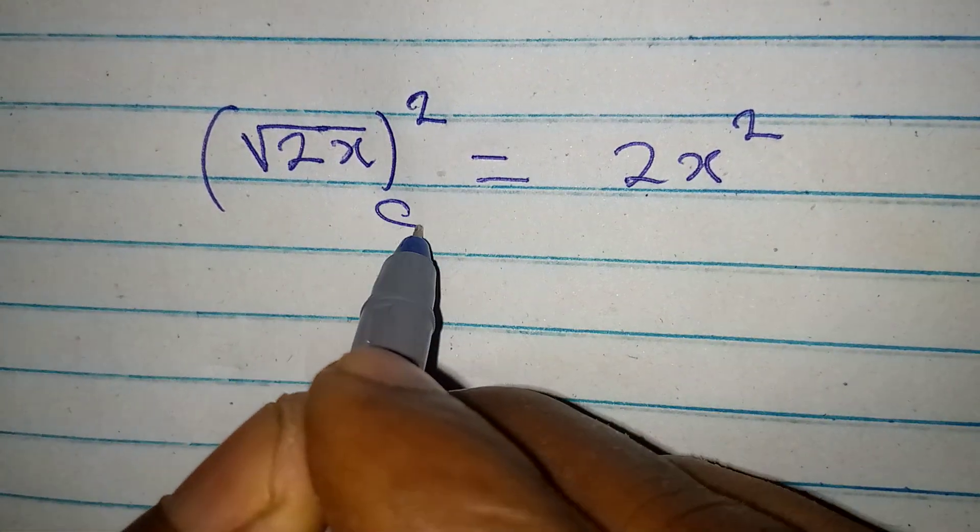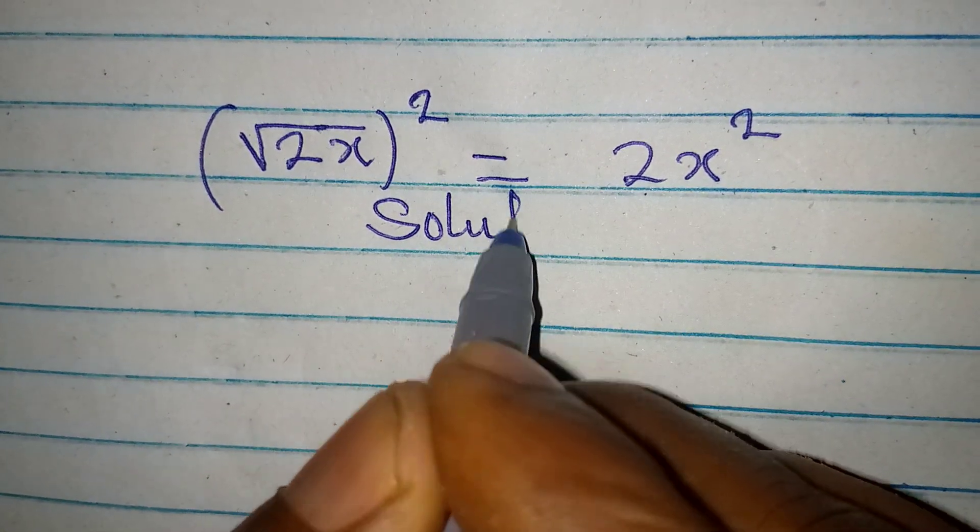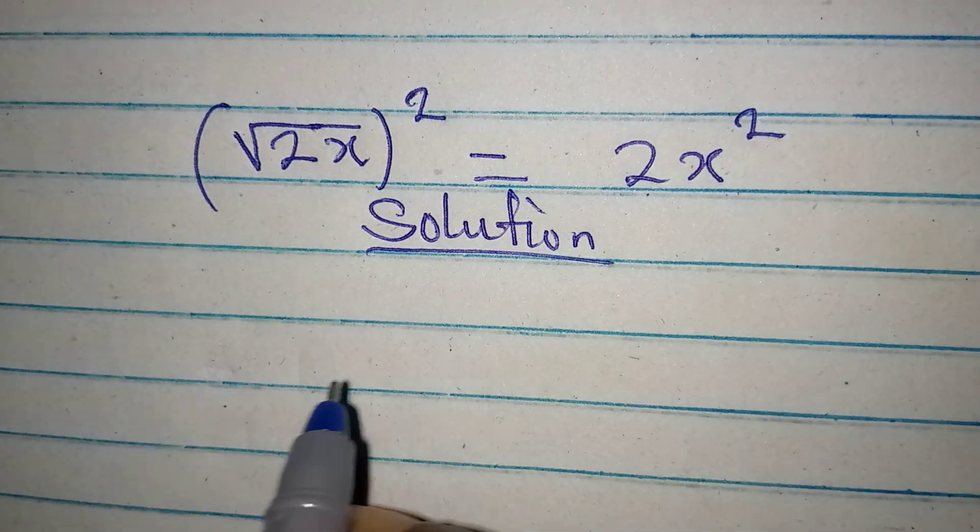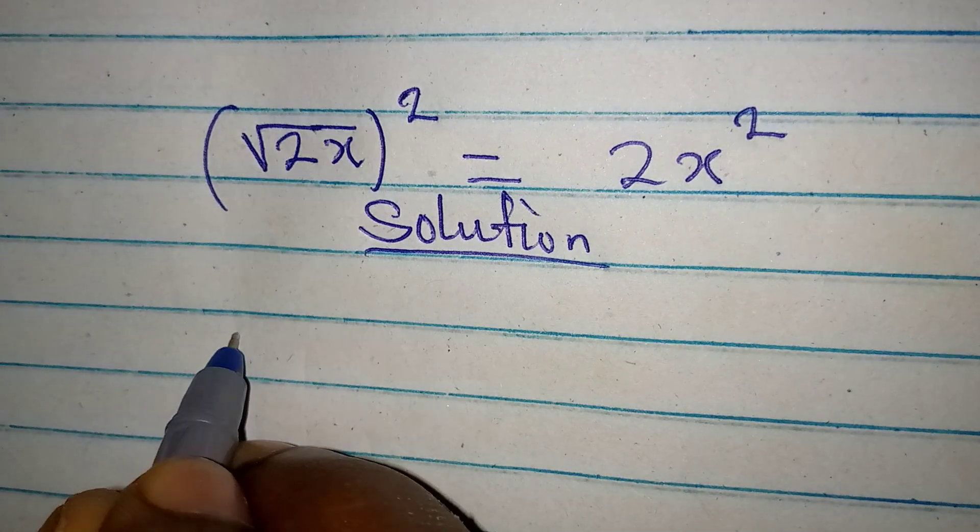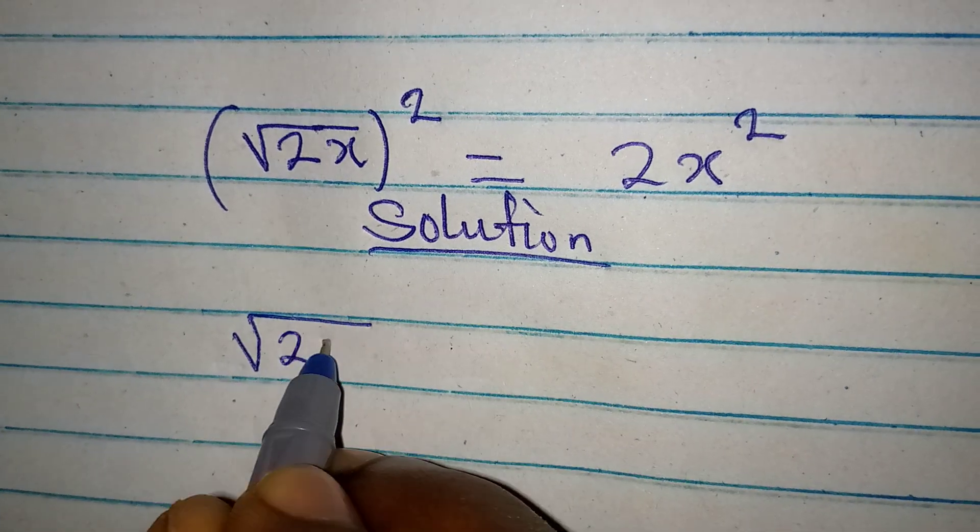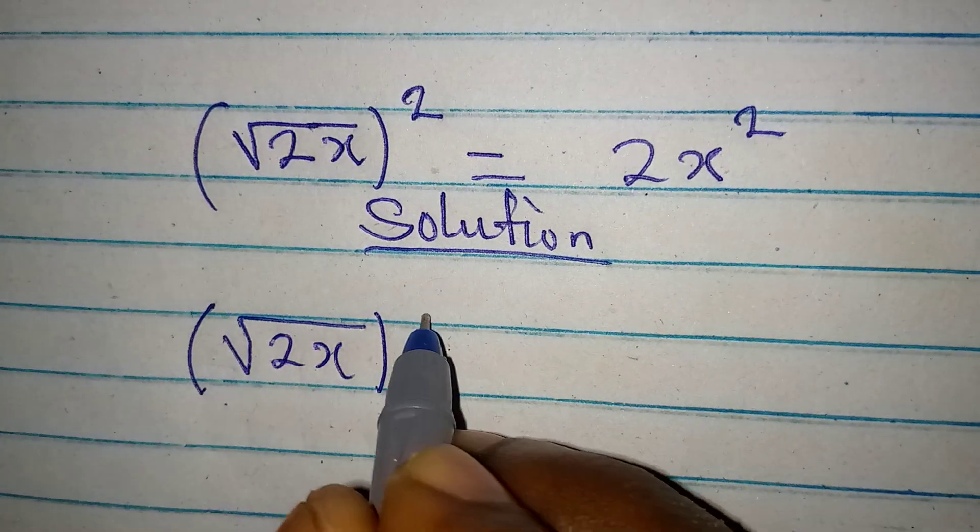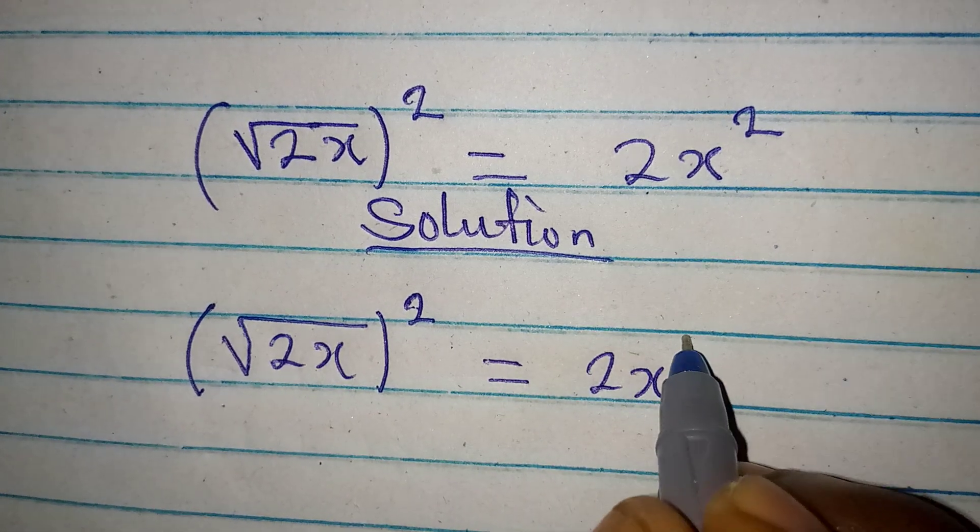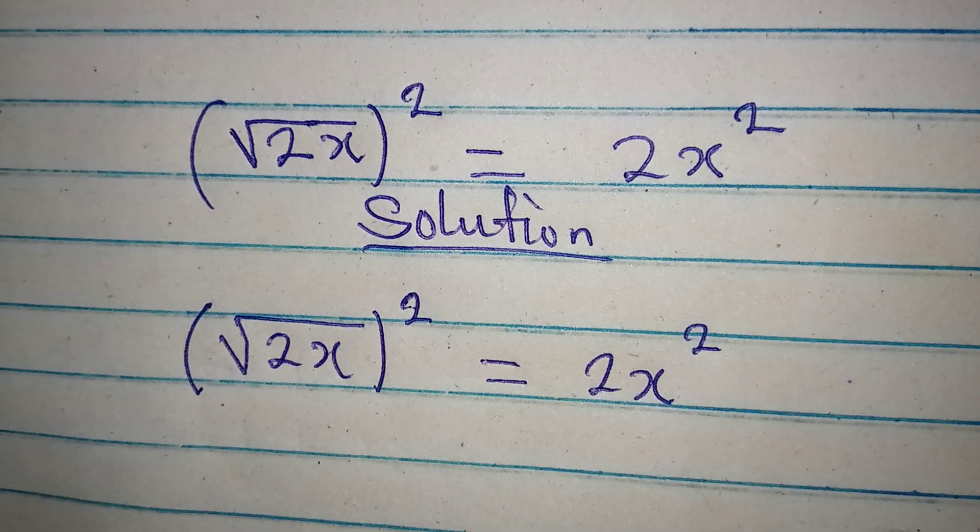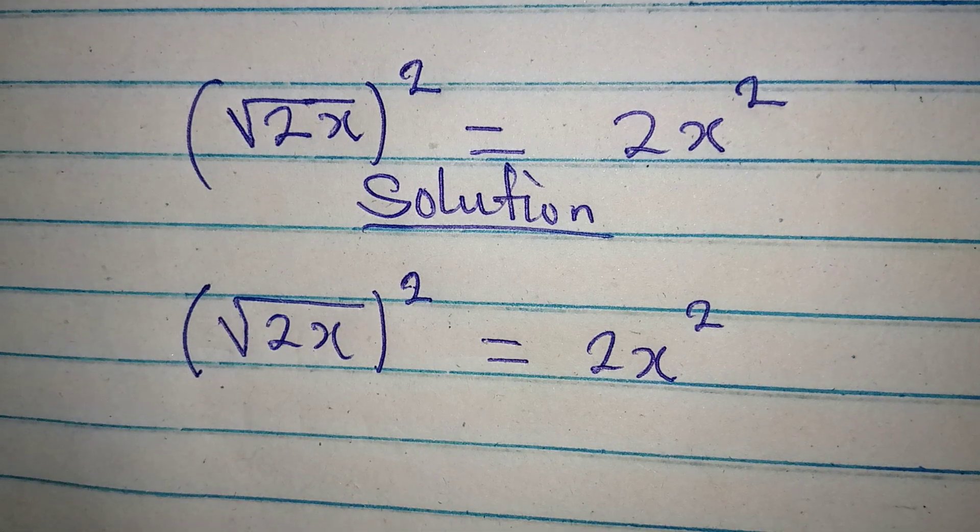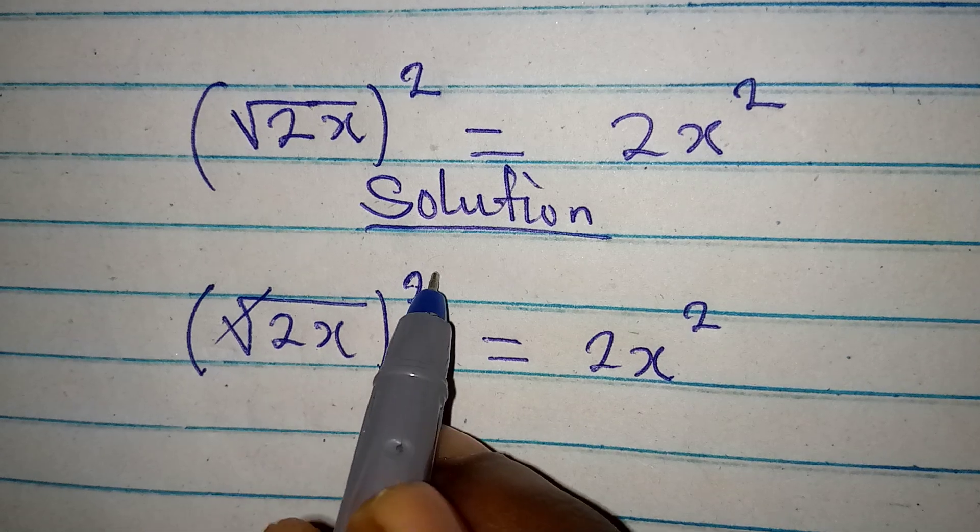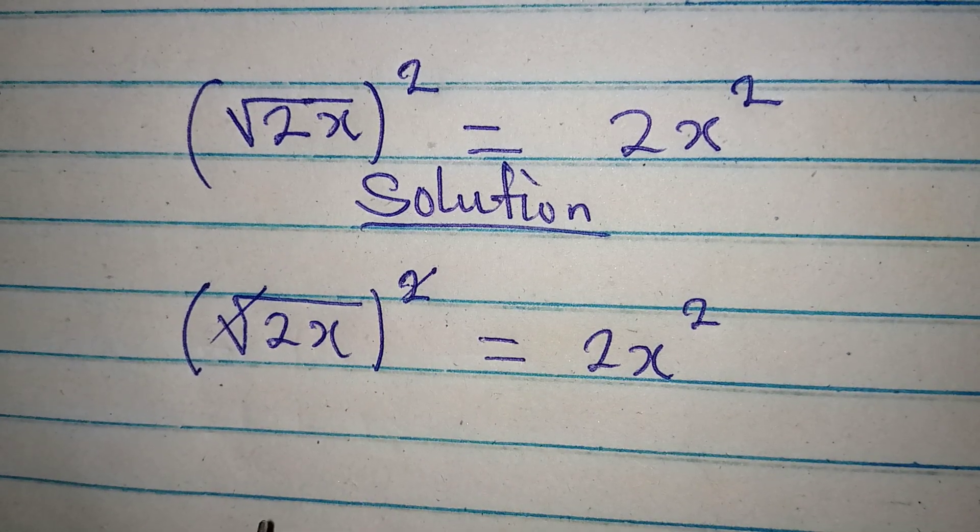Hello everyone, let's provide the solution to this problem. We have square root of 2x to the power of 2 equal to 2x squared. From here we can simply eliminate this because of this, so this means that 2x is equal to 2x squared.